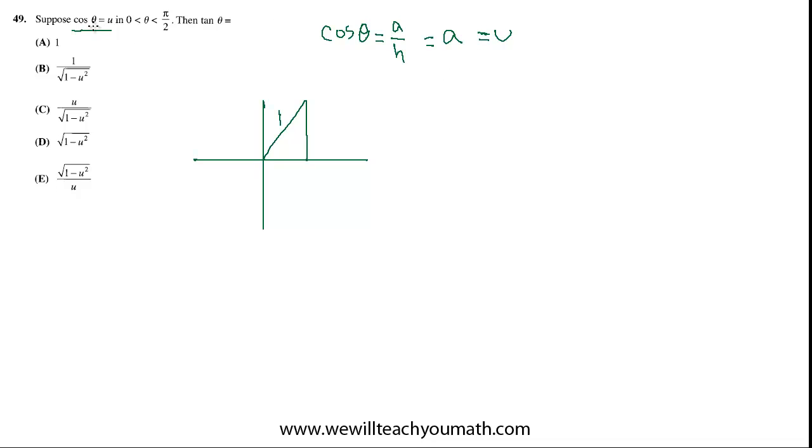In other words, if the cos theta is u, then the length of the adjacent side is u because cos is adjacent over hypotenuse. And if it's the unit circle, the hypotenuse is 1. Hopefully, that's clear. Then, we know that this angle is theta. And we know it's a right triangle because it always is on the unit circle. And that gives us enough information that we can find the length of the opposite side in terms of u. Let's call it x for a moment.